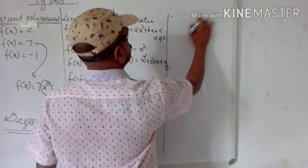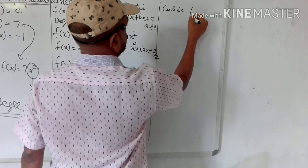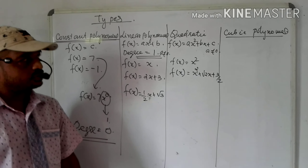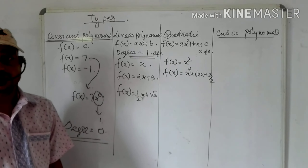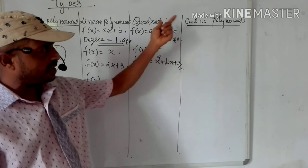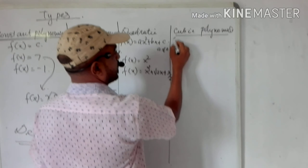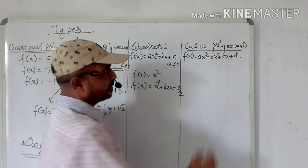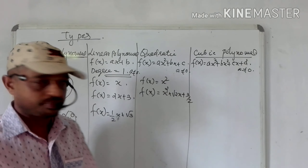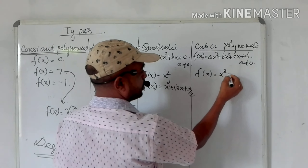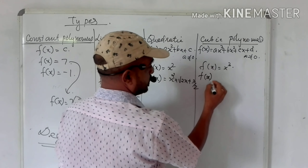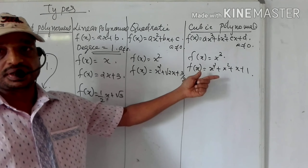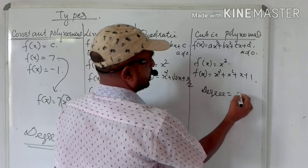A cubic polynomial is a third degree polynomial. Its general form is f(x) = ax³ + bx² + cx + d, where a ≠ 0. For example, f(x) = x³ and f(x) = x³ + x² + x + 1 are cubic polynomials. A polynomial of degree 3 is called a cubic polynomial.